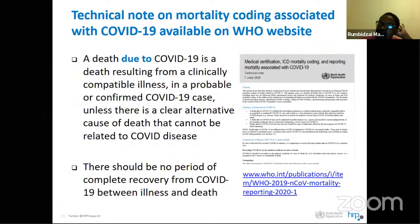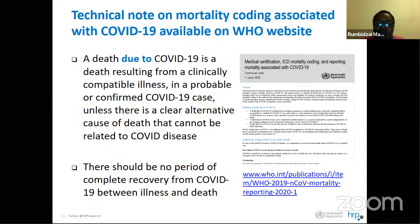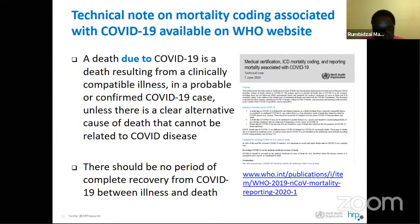In a case where a woman died from COVID-19, the condition directly causing death is respiratory failure; the antecedent cause was pneumonia; and pneumonia was due to pregnancy complicated by COVID-19, giving a code of O98.5. A death due to COVID-19 requires a clinically compatible illness in a probable or confirmed case with no clear alternative cause of death and no recovery period between illness and death — if the patient recovered then died of something else, it ceases to be a COVID-19 death.